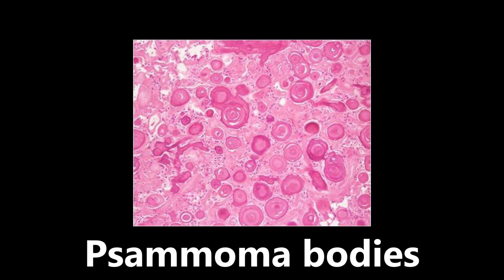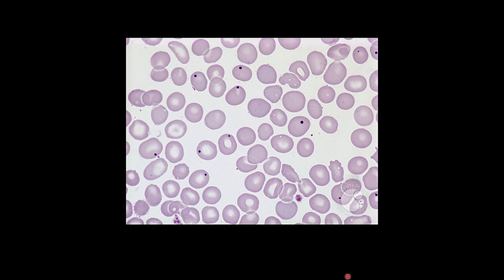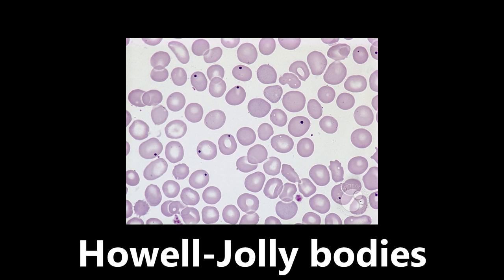This is a peripheral smear that we need to identify — we're seeing some abnormalities within these cells. This is an example of Howell-Jolly bodies. These are basophilic remnants — a dark purple color — which are remnants of DNA seen in red blood cells of patients with low spleen function or asplenia. If you see these dark purple small inclusions in these cells, think Howell-Jolly bodies.